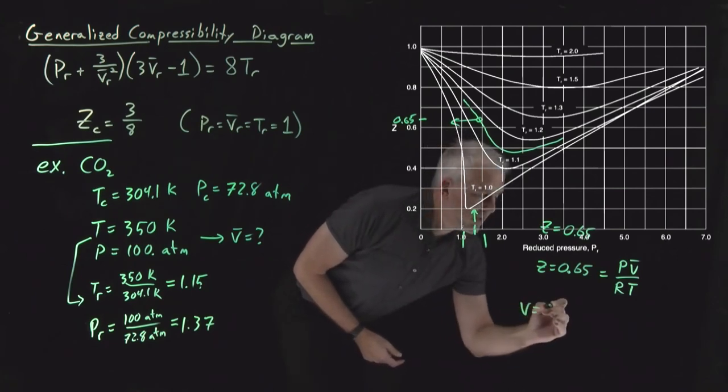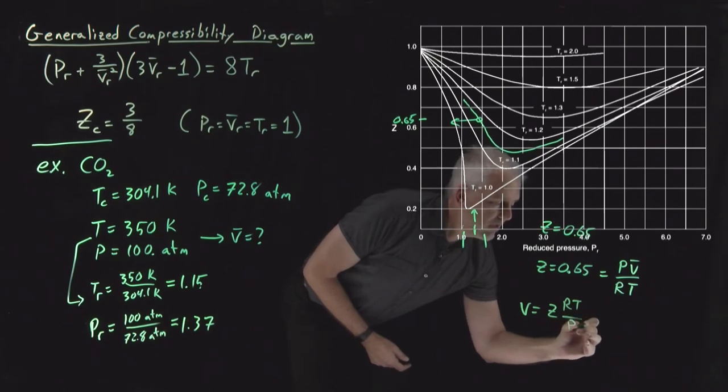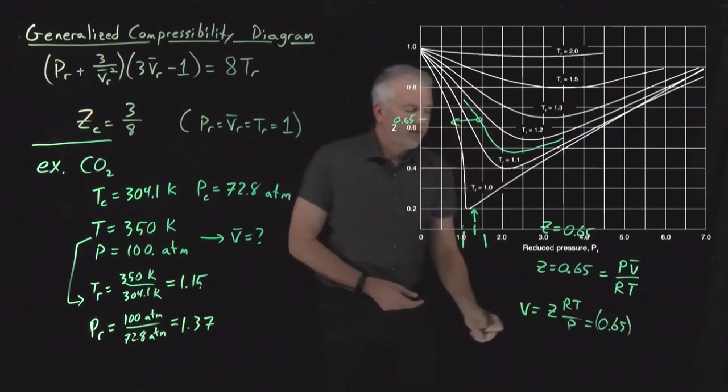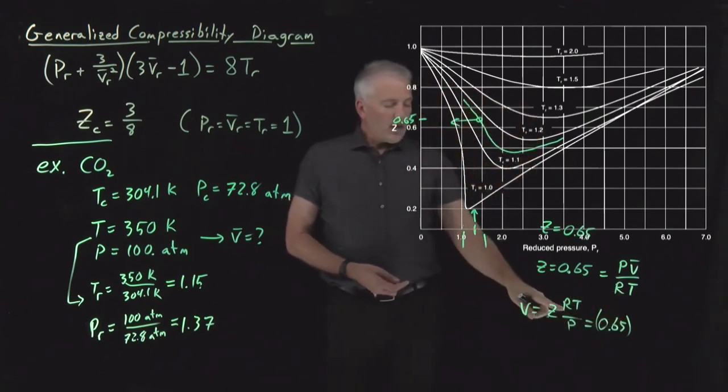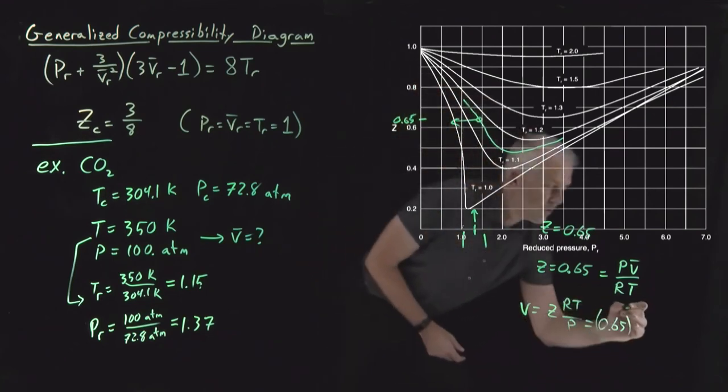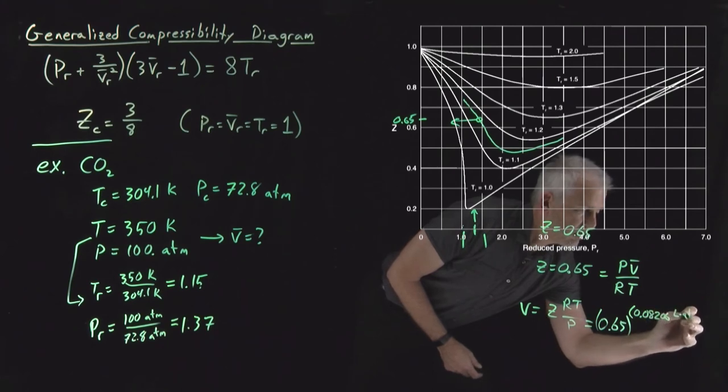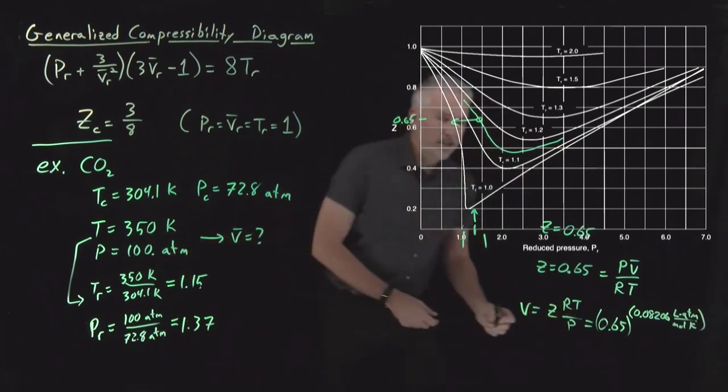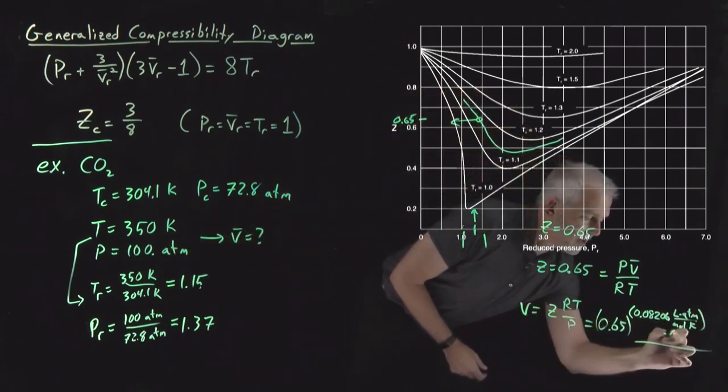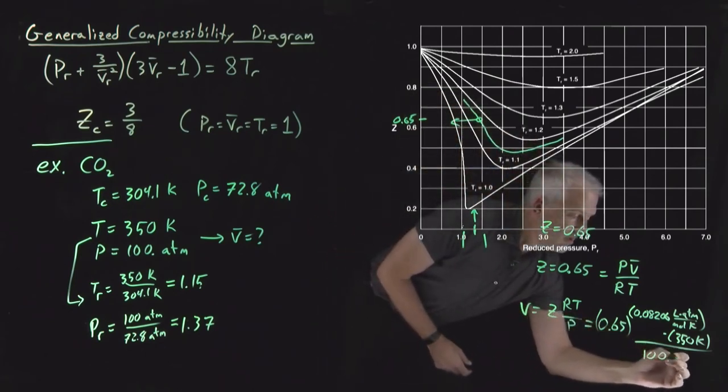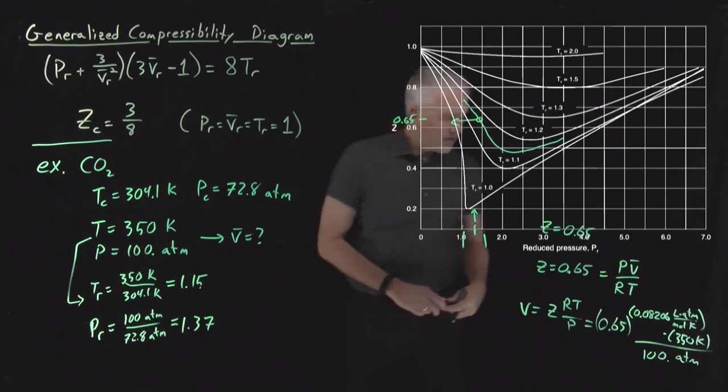So the molar volume is going to be ZRT over P. So 0.65 for the compressibility factor. R, if we have pressures in atmospheres, I'm going to use R in units of liter atmospheres per mole Kelvin. Also in the numerator, I've got a temperature of 350 Kelvin. So the numerator multiplied by 350 Kelvin. In the denominator, divide by my pressure of 100 atmospheres.